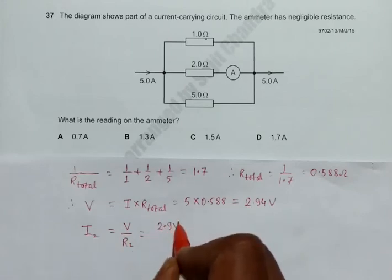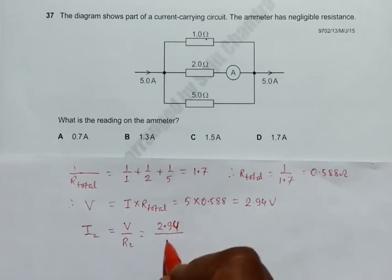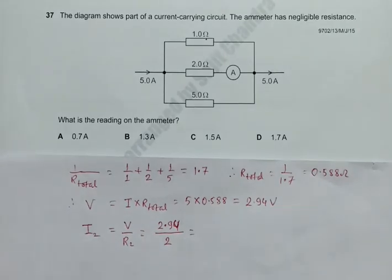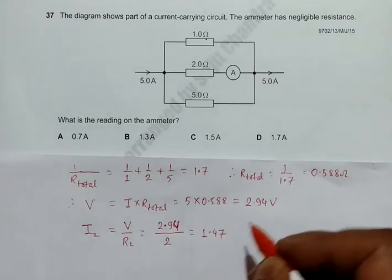2.94, as we have just got that value, and R2 equals 2. So its value will be 2.94 divided by 2, which equals 1.47. So the